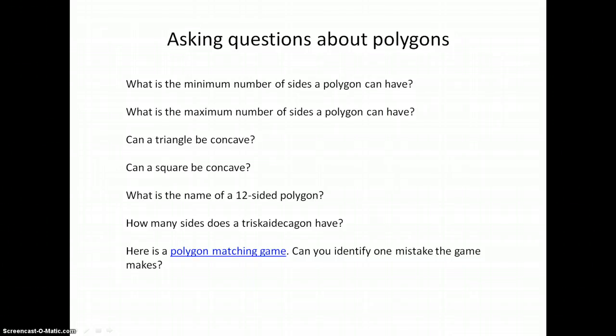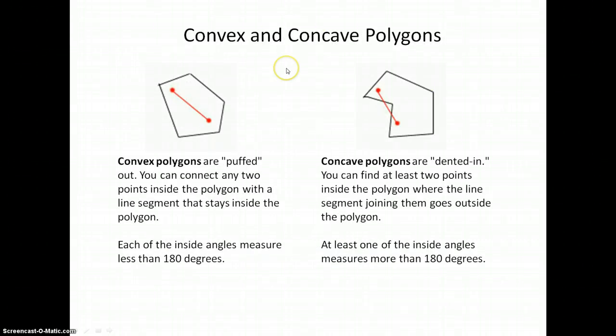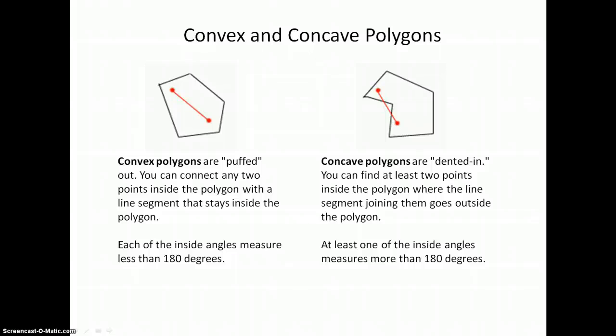I hope you enjoy thinking about polygons. Convex and concave polygons are two names we can use to describe their shape. Convex polygons are puffed out. You can connect any two points inside the polygon with a line segment that will still stay inside the polygon. Each of the interior angles of a convex polygon measures less than 180 degrees.